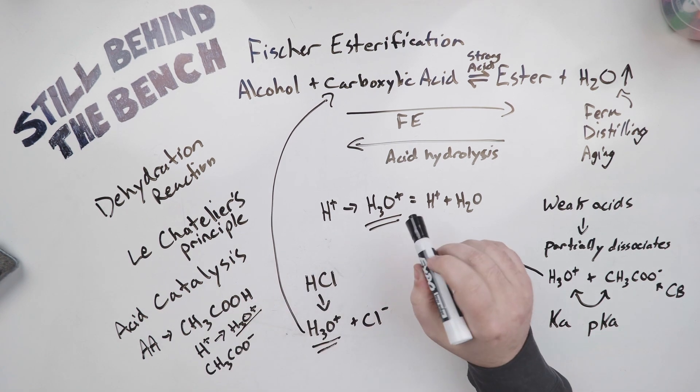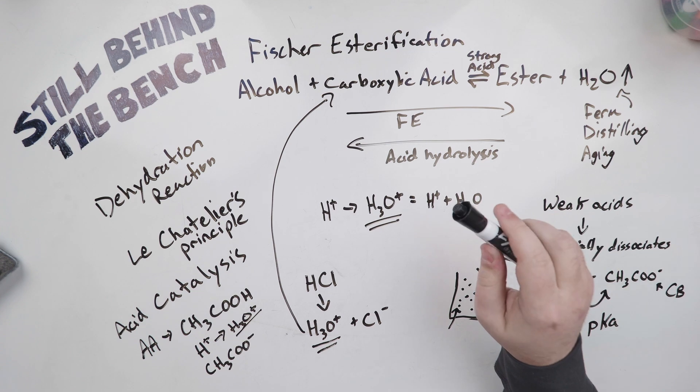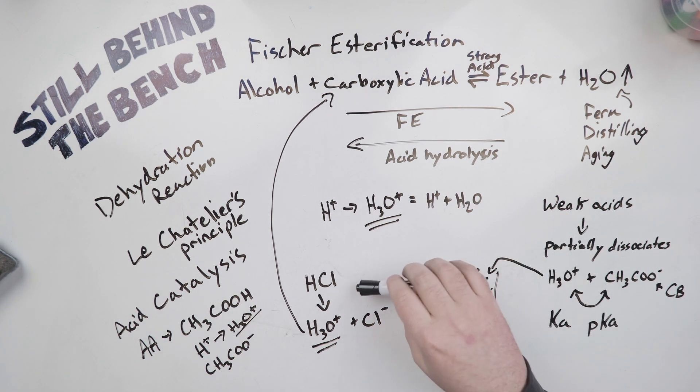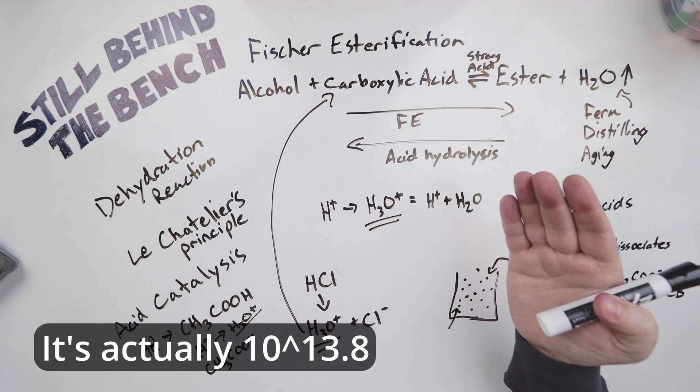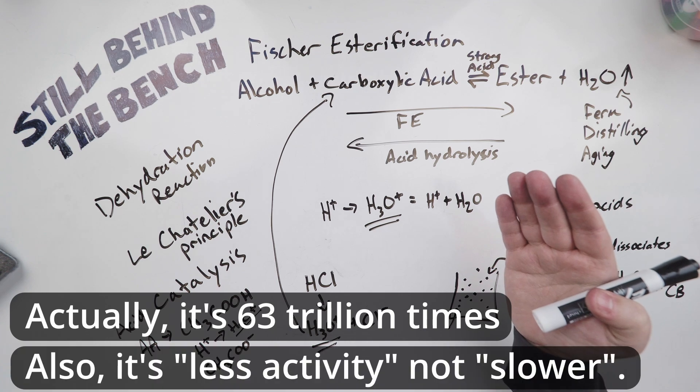Just to give you some general ideas, the difference between the rate of action with something like hydrogen chloride and acetic acid is something like 10 to the power of 12. That's a huge difference. That's like a billion times slower.